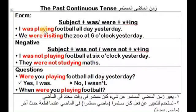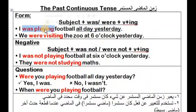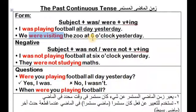I was playing football all day yesterday — كنت ألعب كرة طوال يوم أمس. هنا حدث مستمر فنستخدم ماضي مستمر، ما نستخدمش ماضي بسيط. We were visiting the zoo at six o'clock yesterday — في الساعة السادسة أمس كنا نزور حديقة الحيوان. طالما وقت محدد في الماضي نستخدم الماضي المستمر.